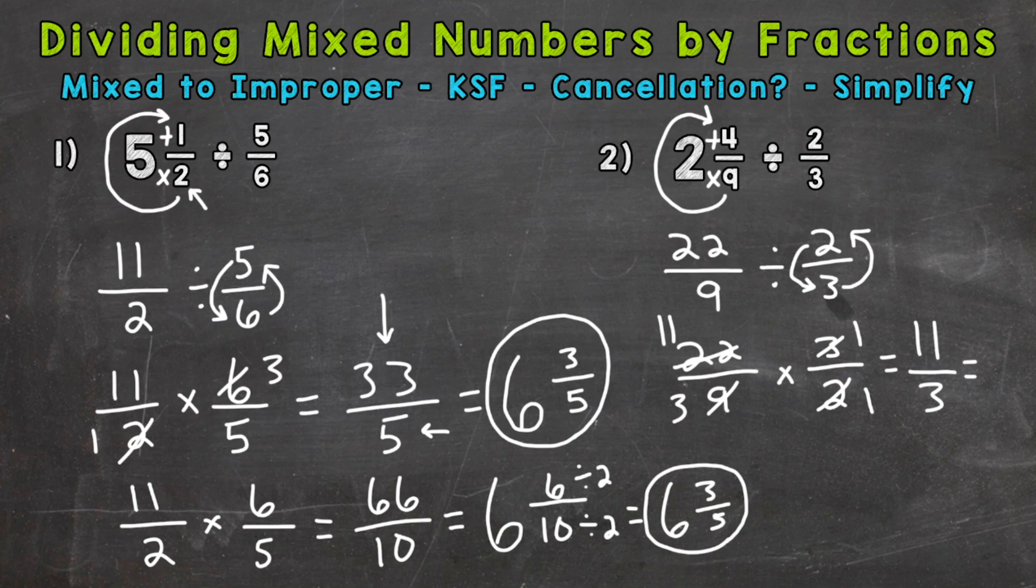So we get 11 over 3, which can be simplified. So we need to see how many whole groups of 3 can we pull out of 11. Well, 3 times 3 gets us to 9. So 3 whole groups. And we have a remainder of 2. And we keep our denominator of 3 the same. So 3 and 2 thirds as our final answer for number 2.